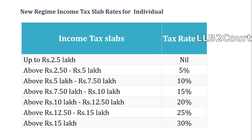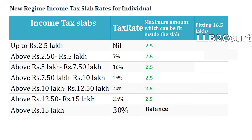Now, this is the new regime income tax slab rate for individuals. Unlike the old regime, there is no difference between age groups — it is common for all age groups. The slabs differ by 2.5 lakhs each up to 15 lakhs, and the tax rate increases by 5% in each slab: nil up to 2.5 lakhs, then 5%, 10%, 15%, 20%, 25%, and 30% above 15 lakhs. The maximum amount fitting in each slab is 2.5 lakhs, with the balance beyond 15 lakhs going into the last slab.